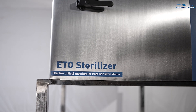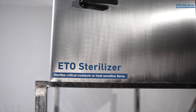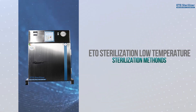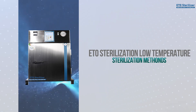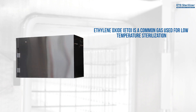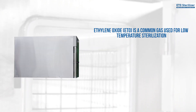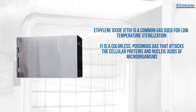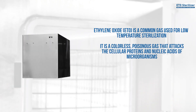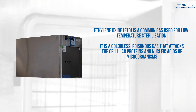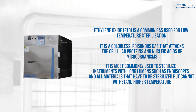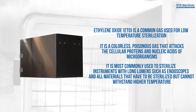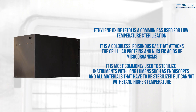ETO sterilizer — sterilize critical moisture or heat sensitive items. ETO sterilization is a low temperature sterilization method. Ethylene oxide (ETO) is a common gas used for low temperature sterilization. It is a colorless poisonous gas that attacks the cellular proteins and nucleic acids of microorganisms. It is most commonly used to sterilize instruments with long lumens such as endoscopes, and all materials that have to be sterilized but cannot withstand higher temperatures.